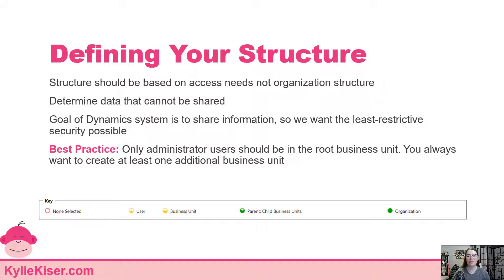Look specifically at data that cannot be shared. It's really easy that after you've built something, it comes up that specific records can't be shared or specific people can't see these, and you haven't planned for it. So bring up those questions at the beginning: what specific records can other people not see? Is there anything extra secure we need to be aware of? Make sure you take that into account with your business unit structure.